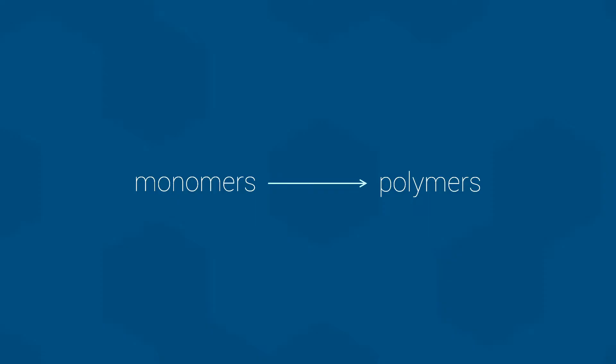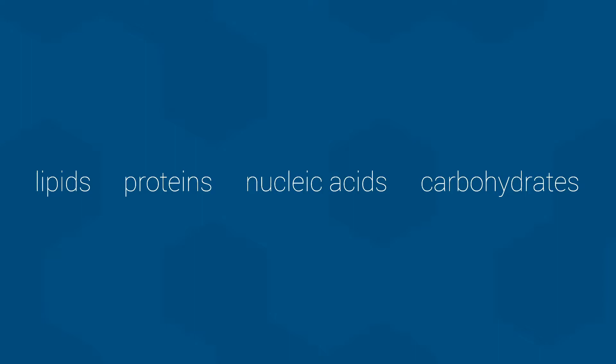There are four general types of macromolecules in biochemistry and biology, three of which we will focus on here in Bio 112. The four types are known as lipids, proteins, nucleic acids, and carbohydrates. Let me briefly introduce each one.